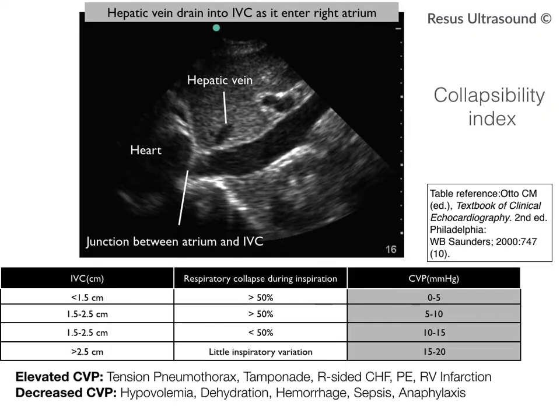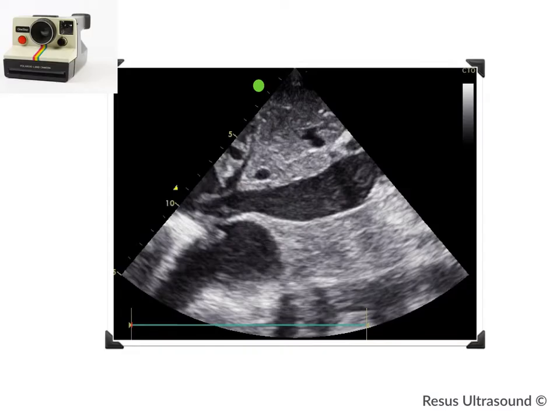Summary of the collapsibility index: if the IVC is small — less than 1.5 cm, sometimes 1.7 cm — and collapses more than half, the patient has low CVP, possibly from sepsis, hypovolemia, or dehydration. If the IVC is large — more than 2.5 cm — and does not collapse at all, it indicates a condition where the IVC cannot drain into the RA, as discussed.